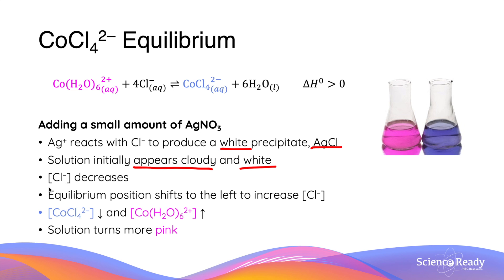At the same time, the reaction between silver and chloride ions will decrease the chloride concentration in this equation. As a result, the equilibrium position will shift to the left hand side in order to increase the chloride concentration — again applying Le Châtelier's principle. As a result, the concentration of dehydrated cobalt chloride decreases and the concentration of hydrated cobalt increases, so the solution will turn more pink.